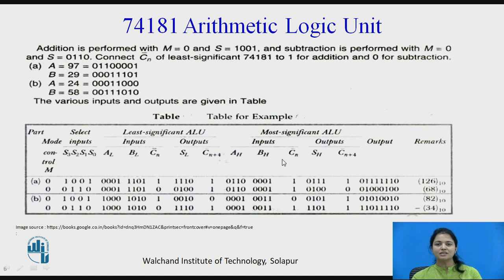Similarly, we process the most significant nibble. Here we take A and B, consider the carry from the lower nibble, and complete the full addition.